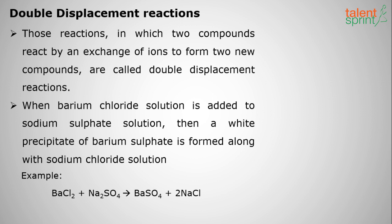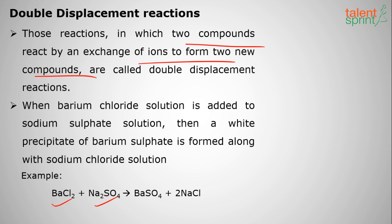We also have double displacement reactions, in which two compounds exchange ions and new compounds are formed. For example, barium chloride reacts with sodium sulfate to give barium sulfate and sodium chloride. In this reaction, two displacements take place, hence it is called a double displacement reaction.